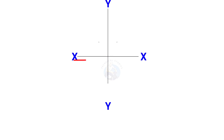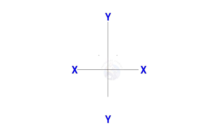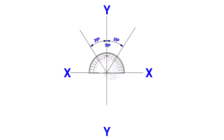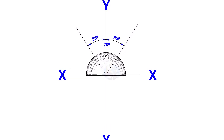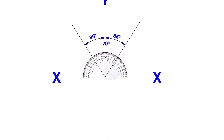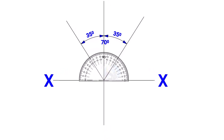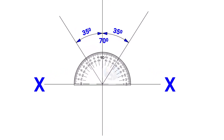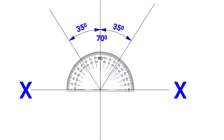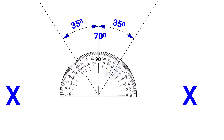Draw line XX and its perpendicular line YY. Since the included angle of the Y branch is 70 degrees, mark 35 degrees on both sides of the axis YY.